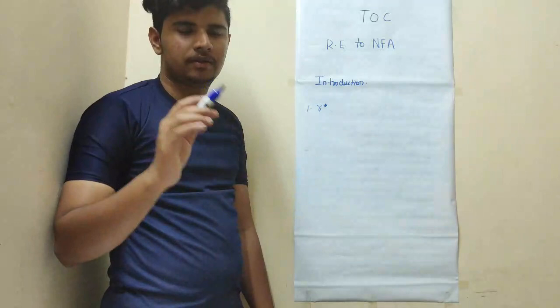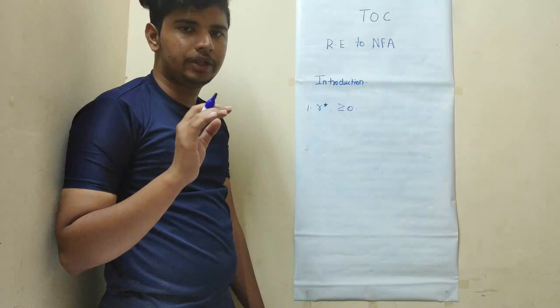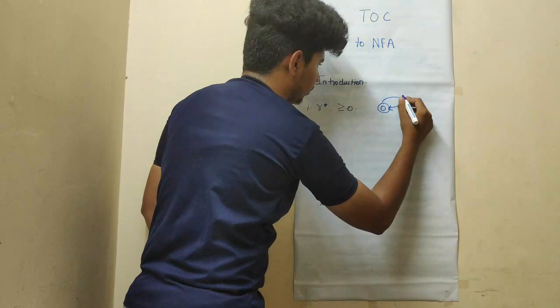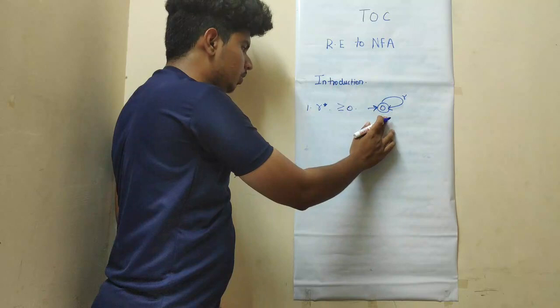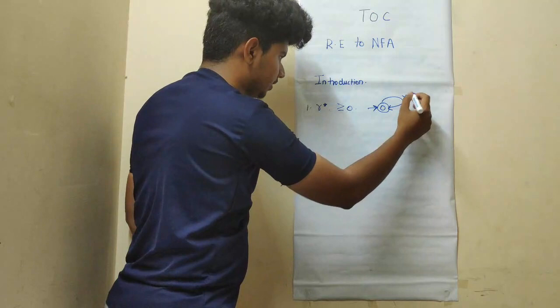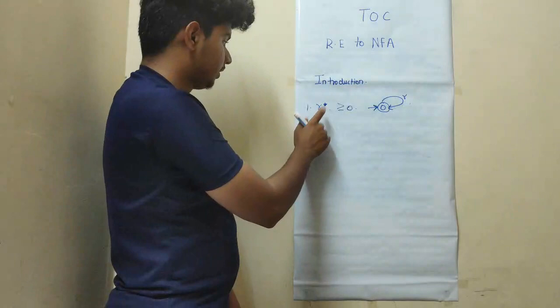For the given regular expression R star, how you can construct a finite automaton is this. You all know that it will accept zero or more than that symbols. It can accept null straight away, it can accept R, it can accept a single R or 2, 3, 4 like that. So this is the equivalent finite automaton for the given regular expression R star.